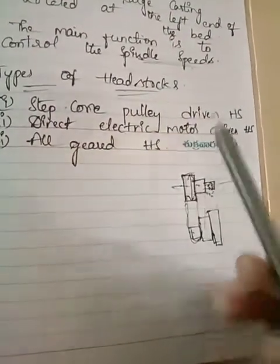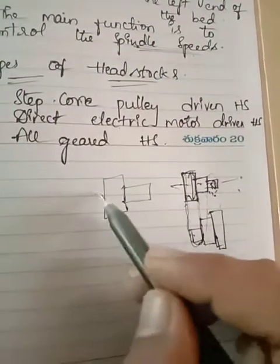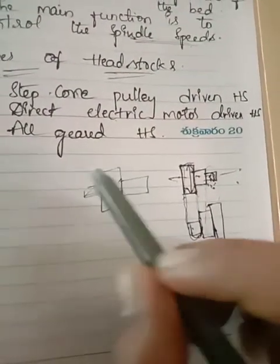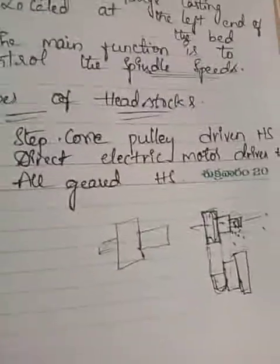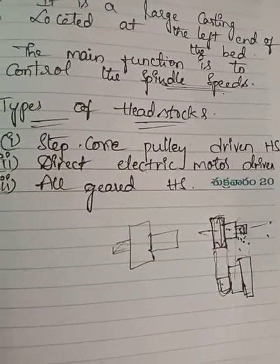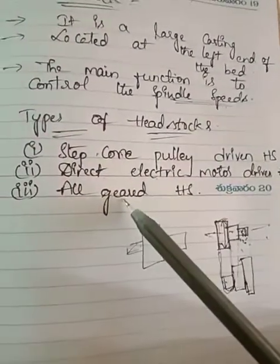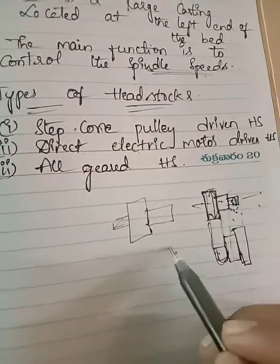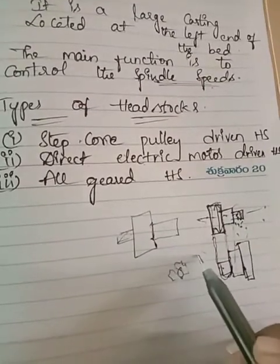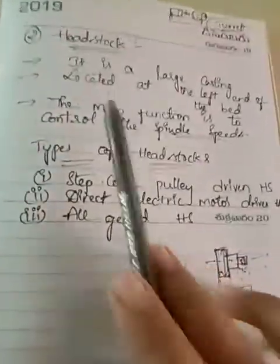In the direct electric motor driven type, the headstock spindle is driven directly by the motor without using any pulleys. In the all-geared headstock, similar to our engines, there is a gearbox: small size gear gives more number of speeds, and large size gear gives low speed.